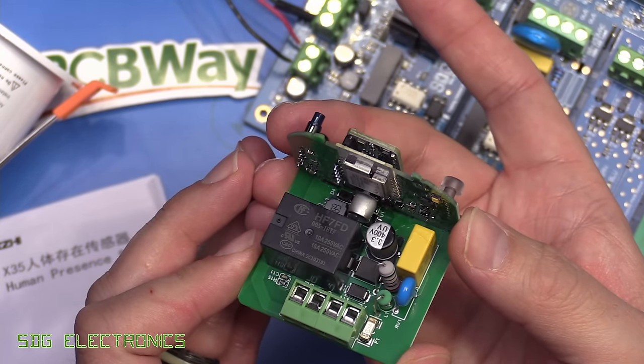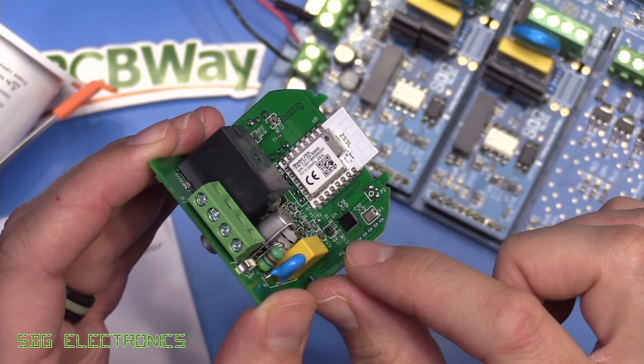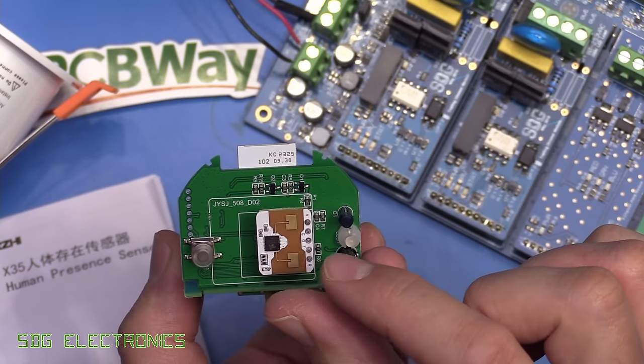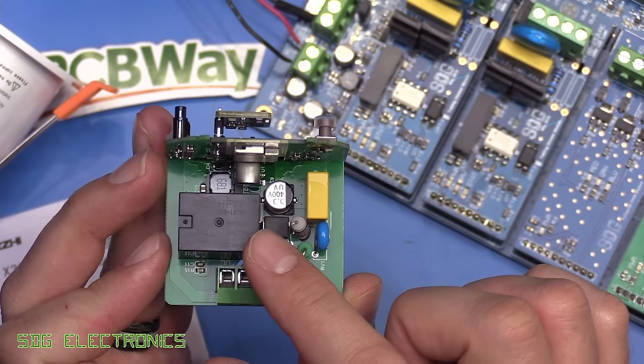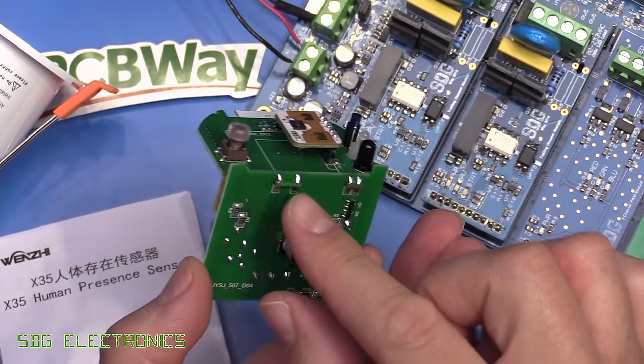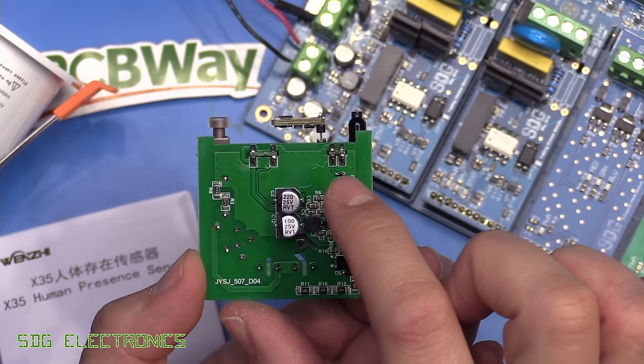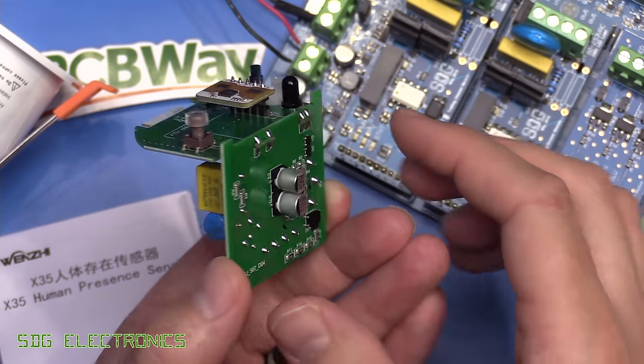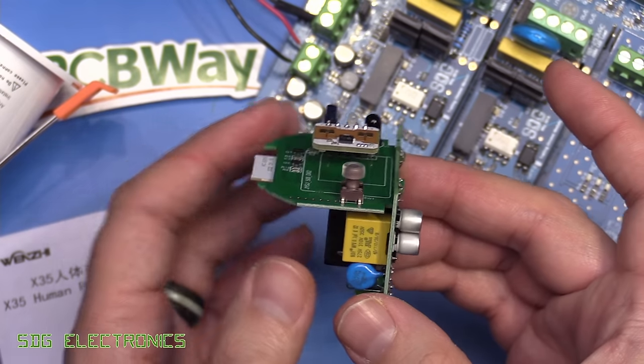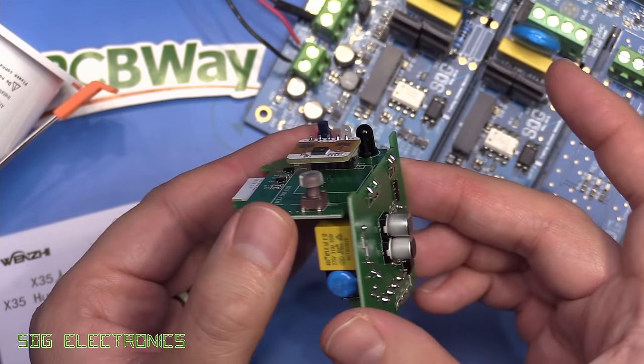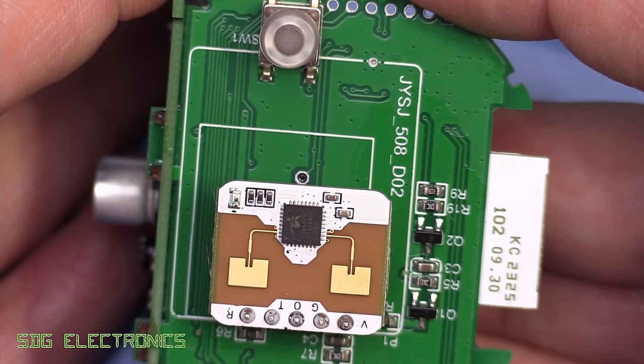That looks pretty much perfect. Zigbee module, there's a little chip there. We've got the radar, the sensors, a switch, and then the relay and all the power supply electronics on this other board. I might just be able to redesign a board here, get it made at PCBWay, and then I can buy a bunch of these and modify them for my needs. There's quite a few devices on this PCB, seems like you're getting decent value for money.